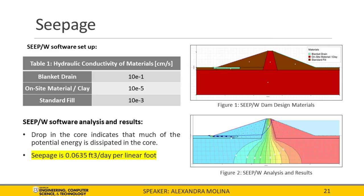Seep-W software allows for groundwater flow modeling and analysis through porous media with set boundary conditions. The hydraulic conductivity values are: 10⁻¹ cm/s for the blanket drain, 10⁻⁵ cm/s for on-site material/clay, and 10⁻³ cm/s for standard fill. The dashed line in Figure 2 is the zero-pressure line, also known as the phreatic line. The large drop in the zero-pressure line within the core indicates much of the potential energy is dissipated there; water enters the core at 55 feet and exits at 2.5 feet. Seep-W results demonstrate seepage of 0.0635 cubic feet per day per linear foot, approximately 10 cubic feet per day.